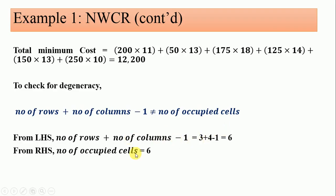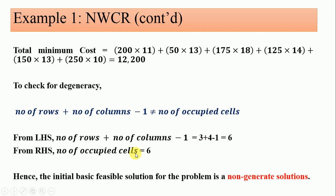If they are equal, we have a non-degenerate solution, so the initial basic feasible solution is non-degenerate. If they are not equal, it is going to be a degenerate solution. Hope you've learned something new in this video.